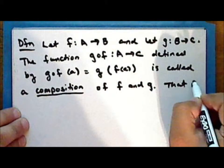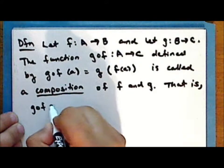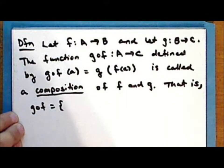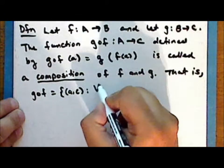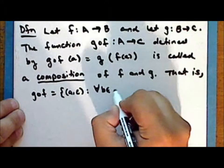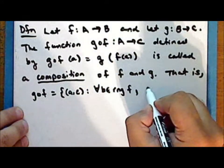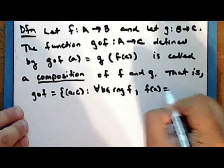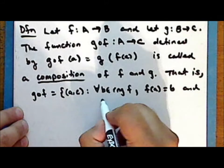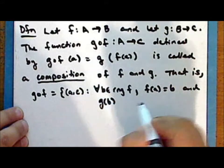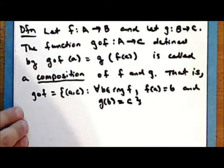That is, the composition g∘f is the set of ordered pairs (a, c), where for every element b in the range of the function f, that element b is mapped onto by the function f, and that element is then mapped by the function g onto an element c in the set C.